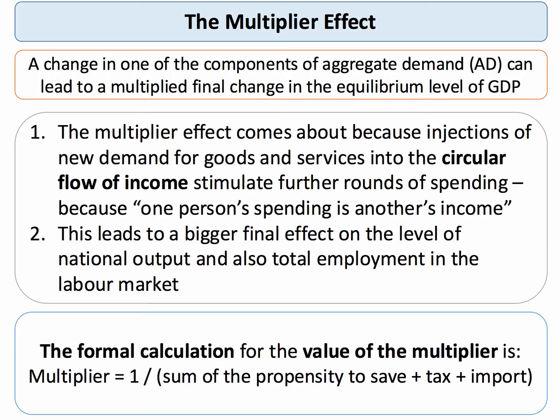The multiplier effect arises because injections, or fresh demand for goods and services into the circular flow model, bring about further increases in incomes and then more spending. Factor incomes provide the resources for people to spend more on goods and services. If the multiplier effect is high, a small change in one of the components of demand can lead to a much bigger final increase in equilibrium GDP and also employment.